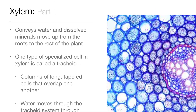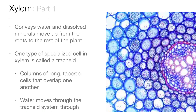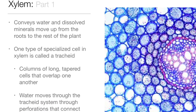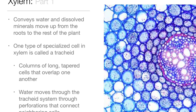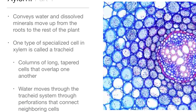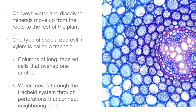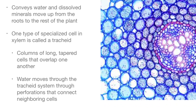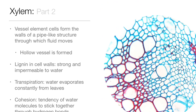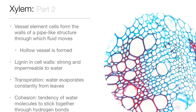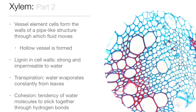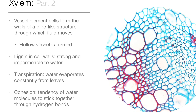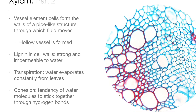Xylem conveys water and dissolved minerals, moving up from the roots to the rest of the plant. One type of specialized cell in the xylem is called a tracheid. Columns of long, tapered cells overlap one another. Water moves through the tracheid system through perforations that connect neighboring cells. Vessel element cells form the walls of the pipe-like structure through which fluid moves, forming a hollow vessel. Lignin in cell walls is strong and impermeable to water.